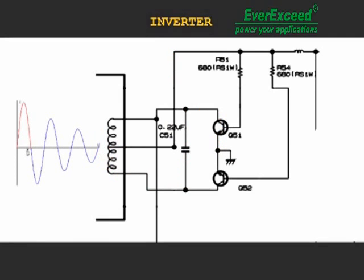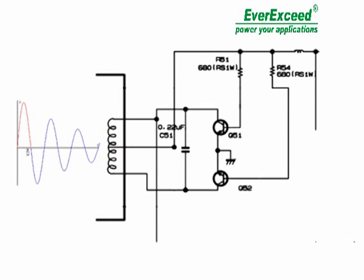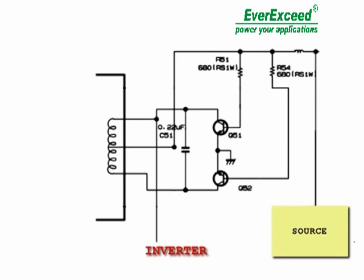Where would the current come from? It turns out that the circuit is powered by a 9V source more or less. But in order to produce current flow, we have to push one of these transistors to conduct. Let's see that every one of them has a 680 ohms resistance at its base. Let's assume that Q51 conducts due to the excitement that the resistance R51 gives to the base.